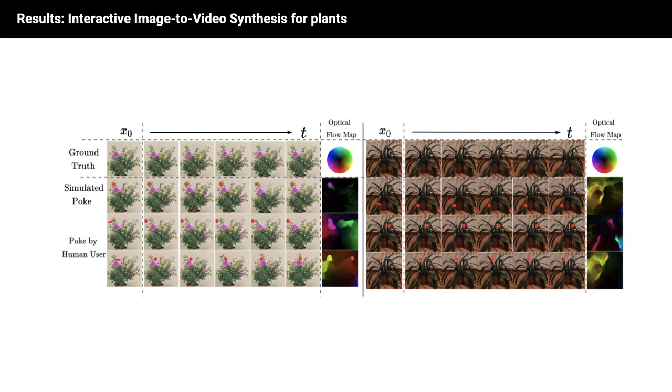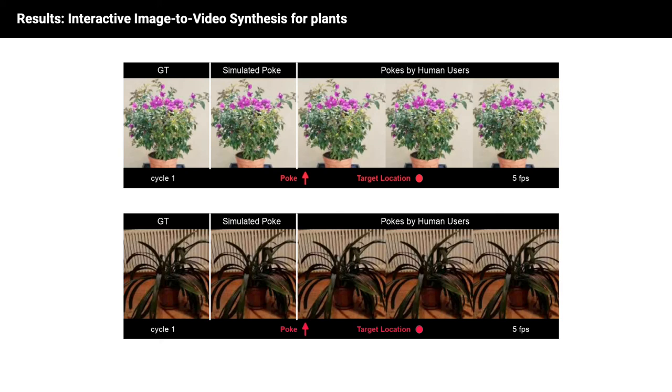We present a newly recorded poking plants dataset, which contains pot plants of various drastically different shapes and textures, and evaluate our model on this dataset. These two examples demonstrate the capabilities of our model.